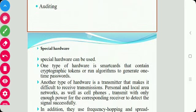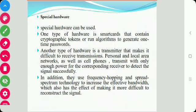Next is special hardware. In addition to the techniques discussed, hardware can also be used for security. One type is the smart card, which contains cryptographic tokens or runs algorithms to generate a one-time password. Another type is a transmitter that makes it difficult for unauthorized users to receive the transmission — signals or data can be received by authorized users only.